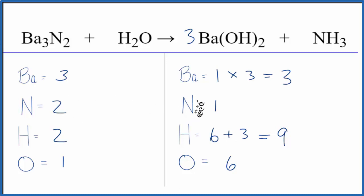All right, let's just fix the nitrogens here. We'll put a two here in front of the ammonia, one times two. That'll give us two. So the nitrogen atoms are balanced. Let's update the hydrogens.